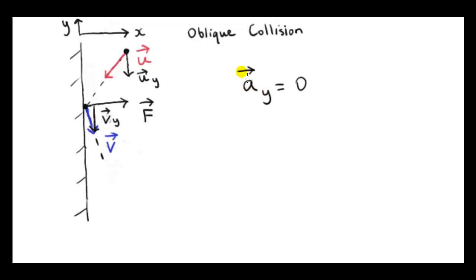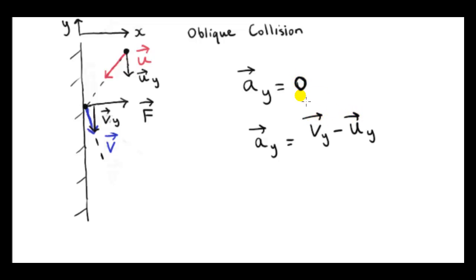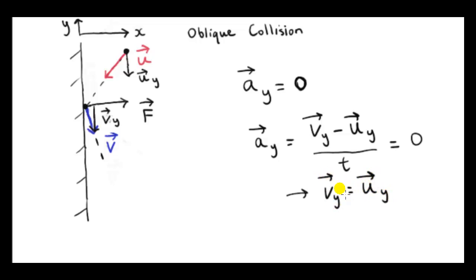We can also see this from the definition of the acceleration vector: if the y-acceleration is zero, velocity in y is constant for all times. Taking any two velocities and dividing their difference by the time elapsed, the numerator must be zero, so we conclude that v_y equals u_y. The vertical component of velocity is unchanged regardless of the time interval considered.